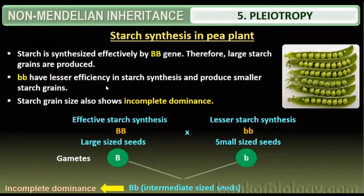In pleiotropy, starch synthesis in pea plants is very important. Starch is synthesized by the BB gene. When both alleles are dominant (BB), the plant synthesizes starch appropriately and properly. Therefore, large starch grains are produced — these are the big seeds of the pea plant with proper starch present.